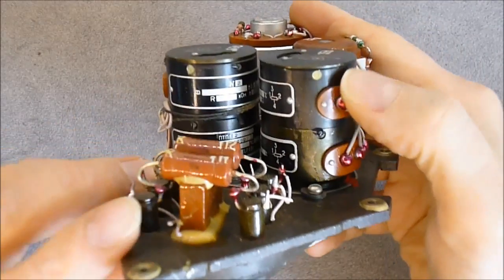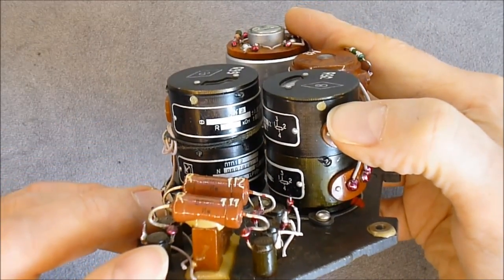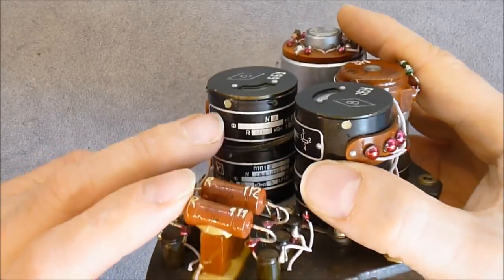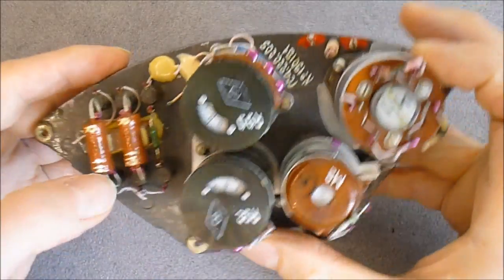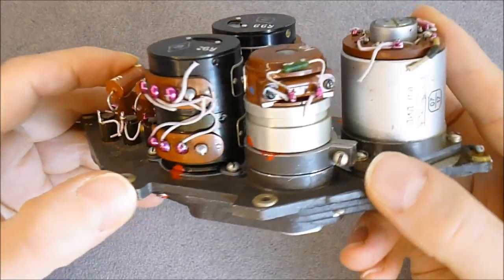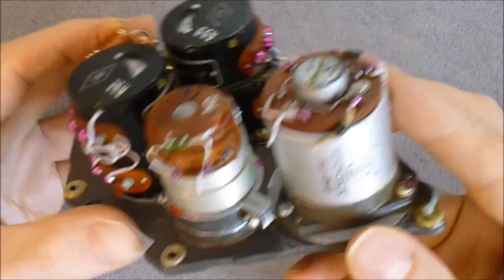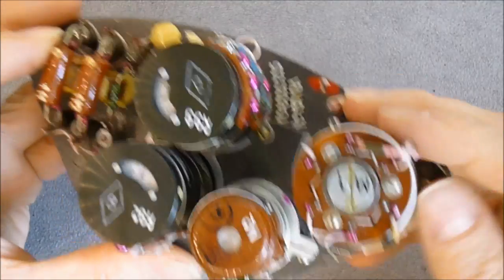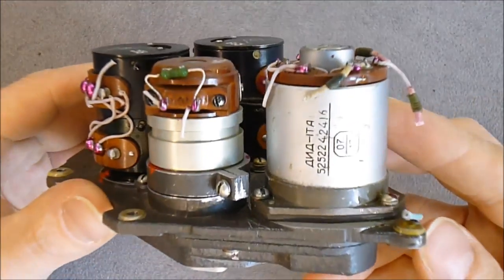Look there is even a seal over the screw here. And they have their own manufacturer plate with serial number and so on. Here we have an electrical motor. And this must be a synchro transmitter.